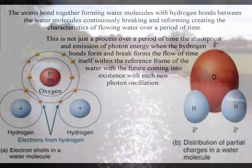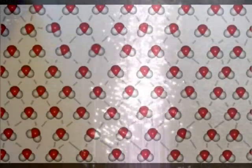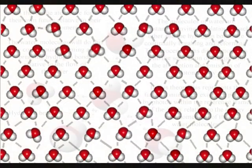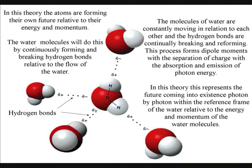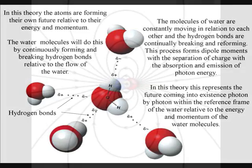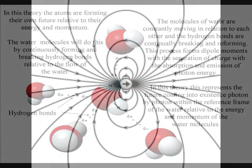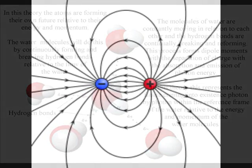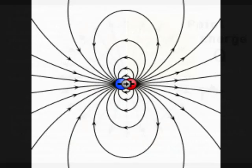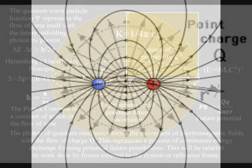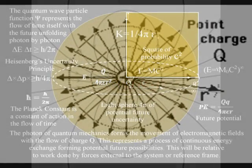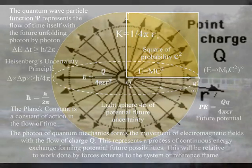We have oxygen and hydrogen forming standing waves over a period of time in the form of water molecules. In this theory, atoms do not just form standing waves over a period of time, but they form their own future relative to their energy and momentum. The water molecules do this by continuously forming and breaking hydrogen bonds relative to the flow of the water, with hydrogen bonds continuously breaking and reforming. This process forms dipole moments with the separation of charge through the absorption and emission of photon energy, representing the future coming into existence within the reference frame of the water.